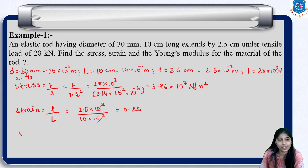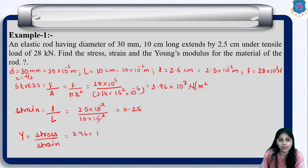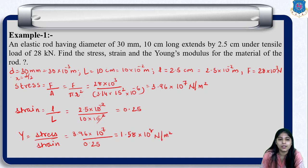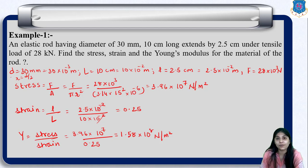Lastly, we need to find Young's modulus. Young's modulus is the ratio of stress to strain. Stress is 3.96×10⁷ and strain is 0.25, so the value of Young's modulus will be 1.58×10⁸ newton per meter square. Since strain has no unit, the unit of Young's modulus and stress will be the same.